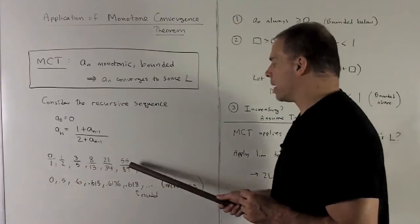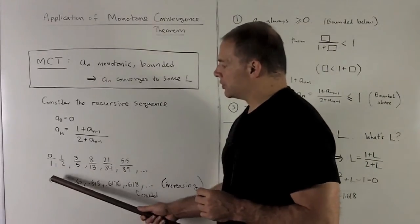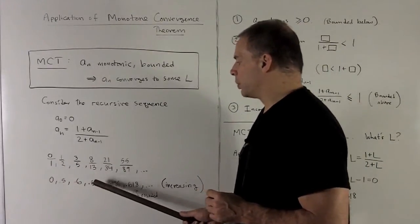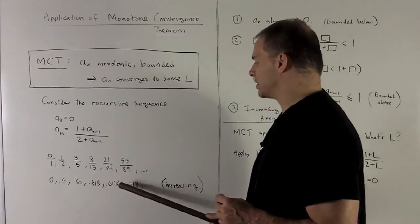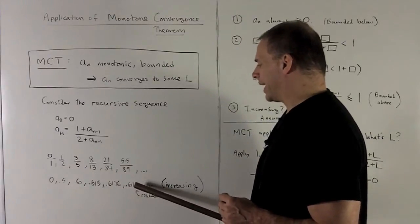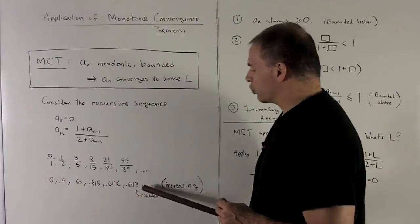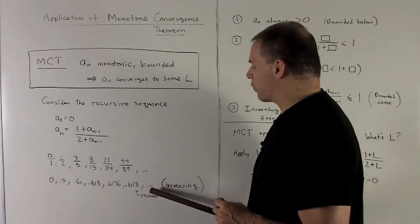Now, if we crunch these down to numbers, we get 0, 0.5, 0.6, 0.615, 0.6176, 0.618, and that 8 is really being caused by a lot of rounding.